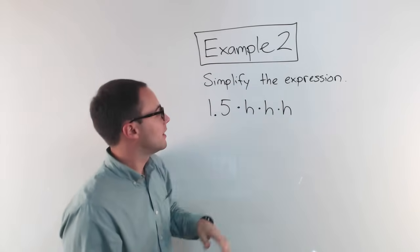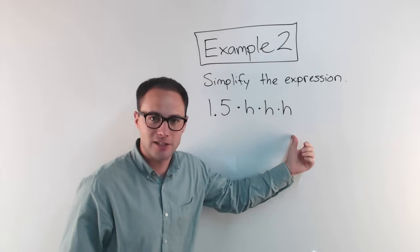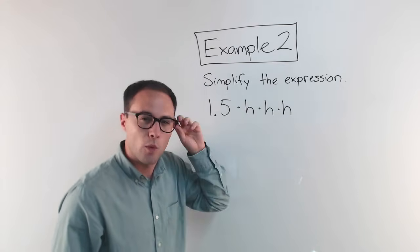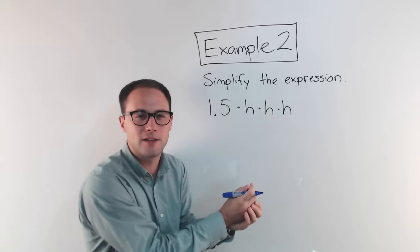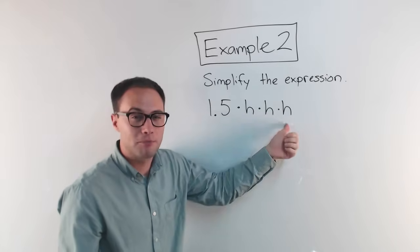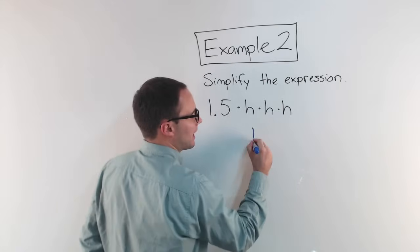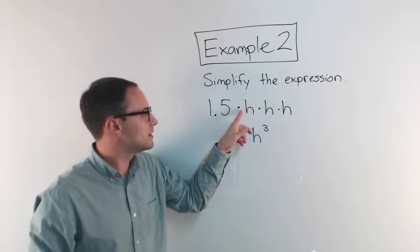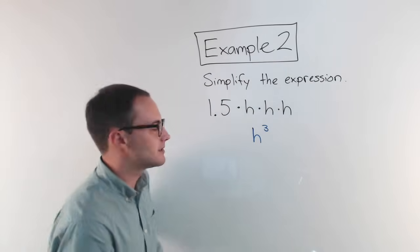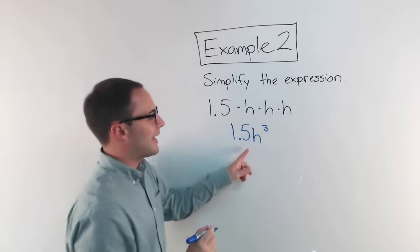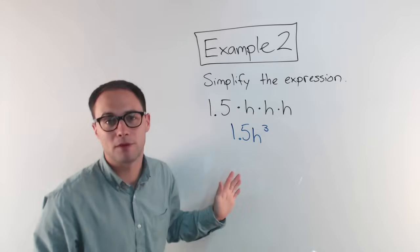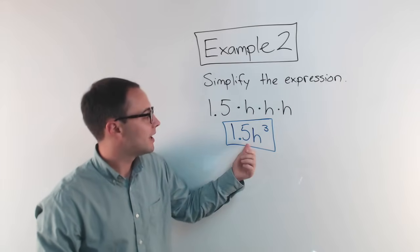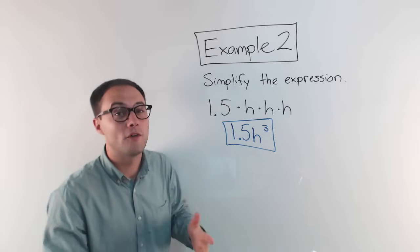Example 2: simplify the expression 1.5 times h times h times h. You should notice right away that you have repeated multiplication — h times h times h. We know a shortcut: using exponents. h multiplied by itself three times is h cubed. And 1.5 times all of that — we can get rid of the multiplication symbol and just put them next to each other. So simplified, the expression is 1.5h cubed. In this case, 1.5 is your coefficient.